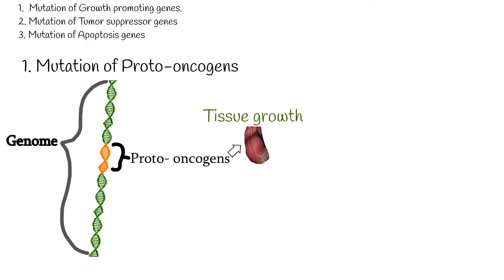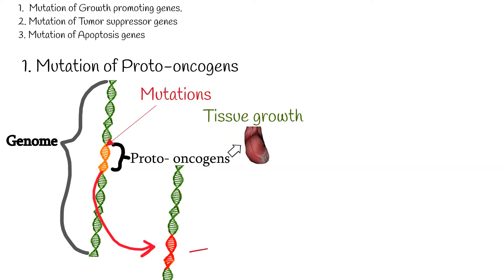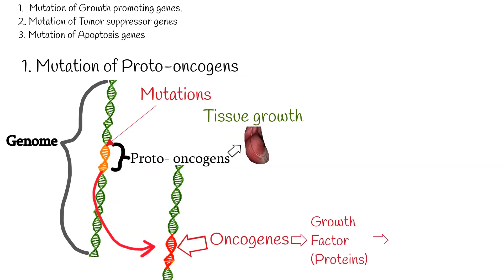If proto-oncogenes are mutated and they are not normal anymore, they are called oncogenes. Oncogenes cause a synthesis of new proteins called growth factors, and they act as a signal for cells to start uncontrolled proliferation, and cancer is formed.